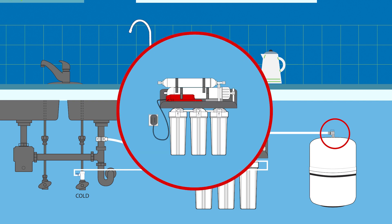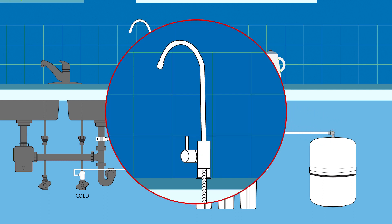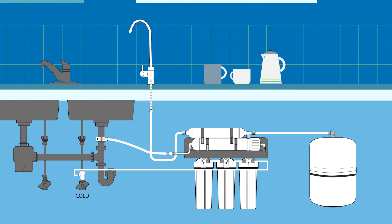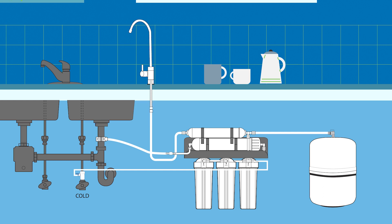For systems with a pump, plug in the power supply. First, purge air from the system by slowly opening the RO faucet until water flows smoothly, then close the faucet. Over the next two hours, the pressure in the system will increase as water fills the system and the RO storage tank.